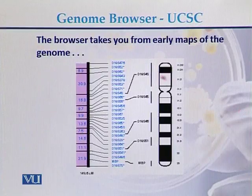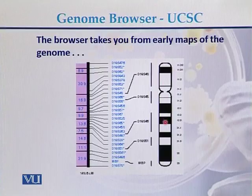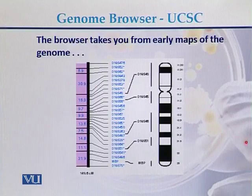The UCSC genome browser gives information about markers that have been mapped on the human genome and other genomes, as well as the cytogenetic map. Here we can see that cytogenetic maps can be viewed at the UCSC genome browser, and these are the list of markers which are present on a particular chromosome.